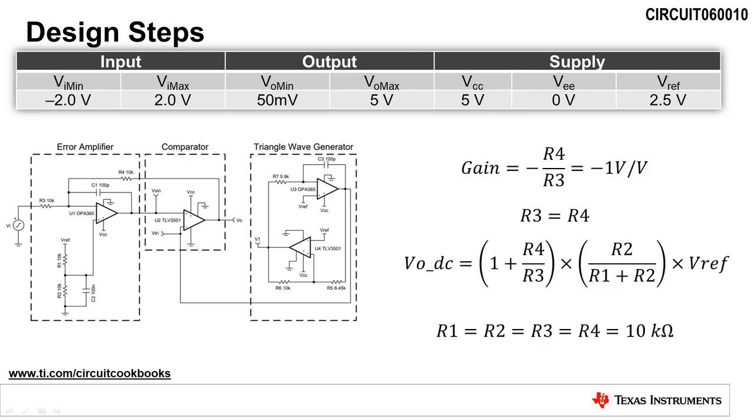The first design step is to set the error amplifier inverting signal gain to minus 1 volt per volt. The gain is equal to negative R4 divided by R3. Therefore, we will set R3 and R4 equal to each other. Next, we will select resistors R1 and R2 to divide down the reference voltage and bias the output voltage to 2.5 volts DC. Using the equation for the DC output voltage, VODC, we see that R1 and R2 need to equal R3 and R4, so that VODC equals the reference voltage, Vref. Therefore, we will use 10 kilo ohm resistors for R1, R2, R3, and R4.